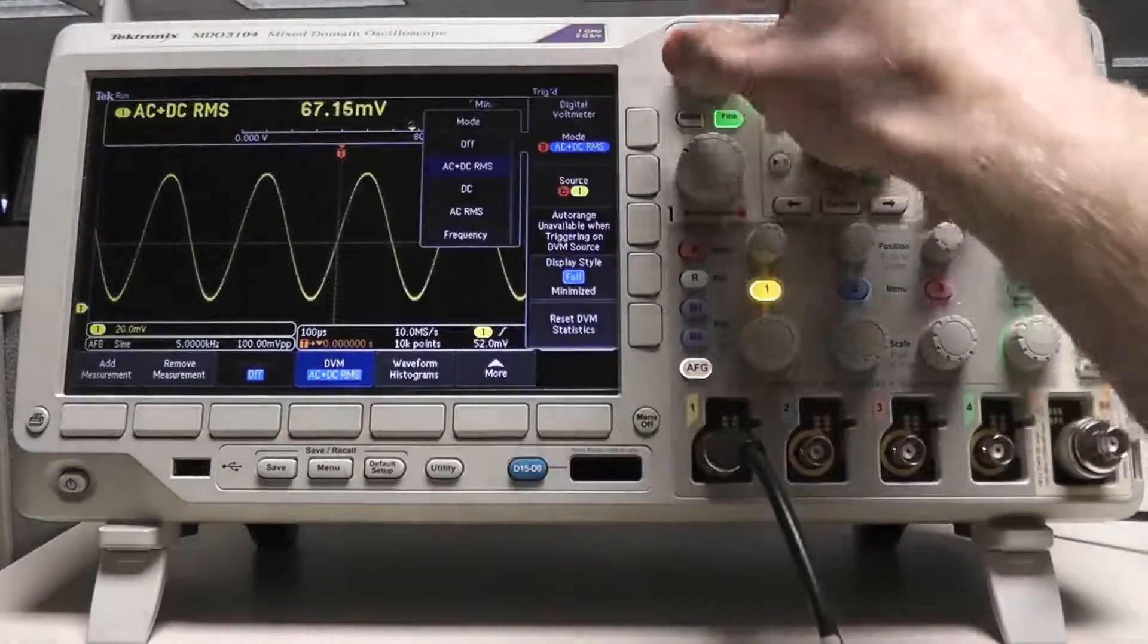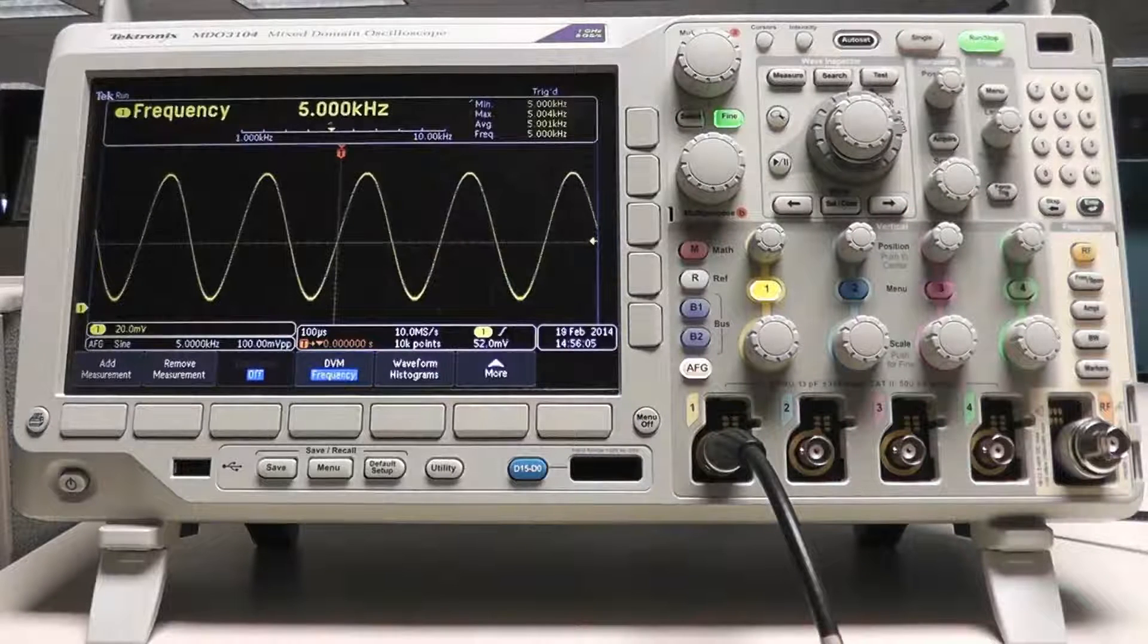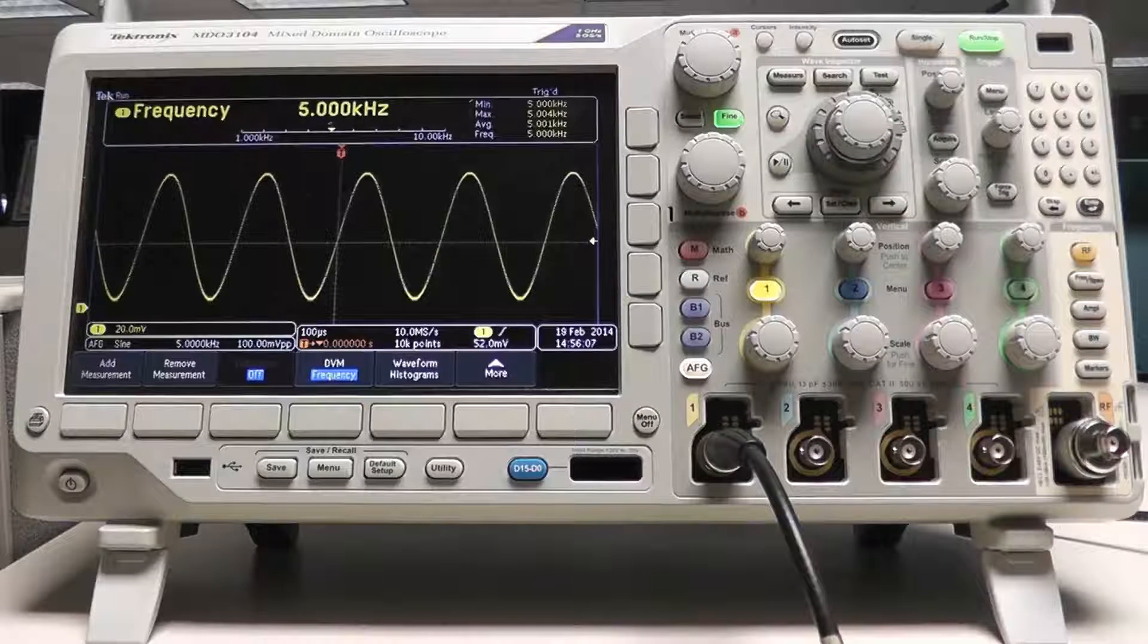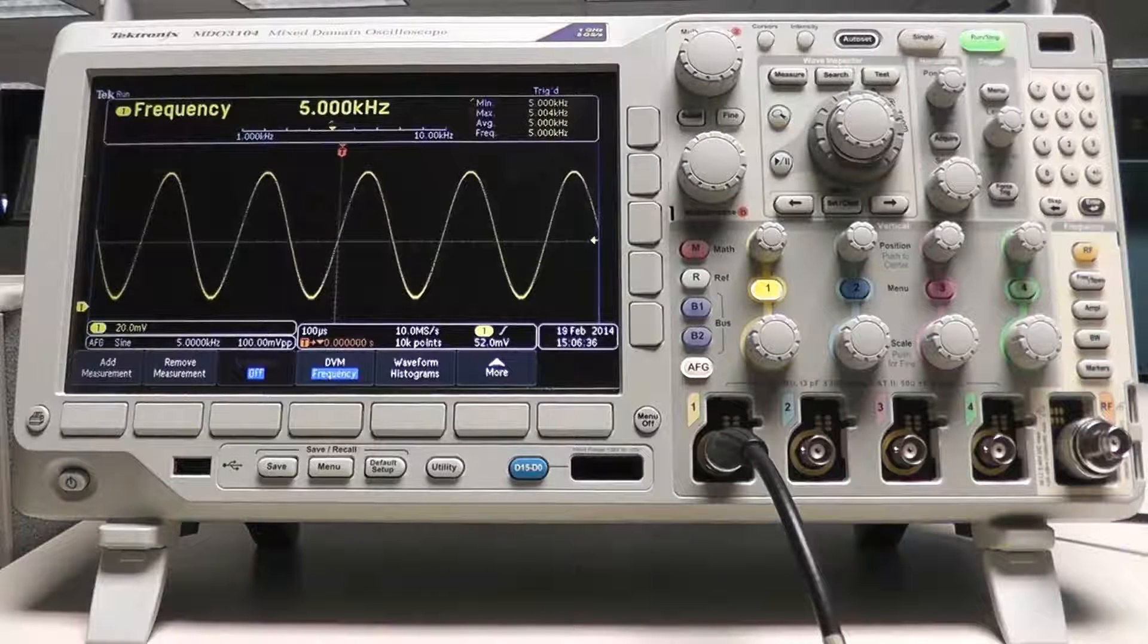The frequency counter can be accessed in the same way as the other options in the DVM. Press the DVM soft key and scroll down to frequency. This will measure the zero crossings of your signal and extract frequency information out of these measurements.